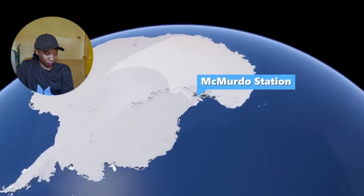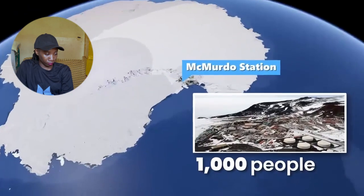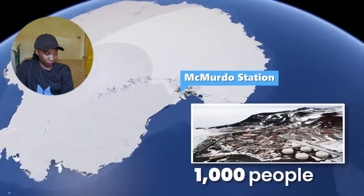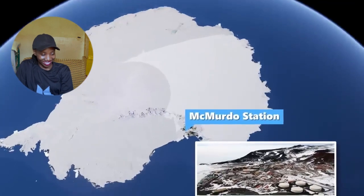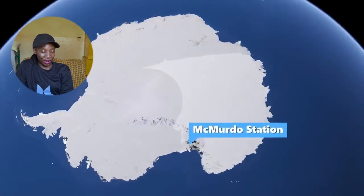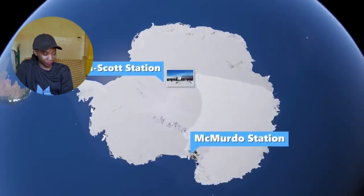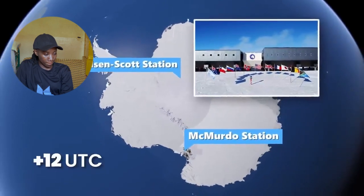Although the USA has no claim over Antarctica, we do have the largest Antarctic station at McMurdo, which can facilitate up to a thousand people, and we also have the only station located on the geographic South Pole at Amundsen-Scott Station. It follows the UTC+12 time zone. Fun fact: in Hawaii, it's actually illegal to laugh loudly.